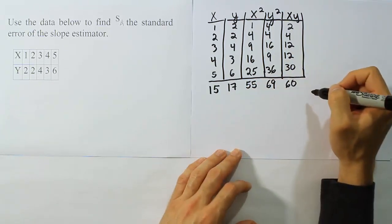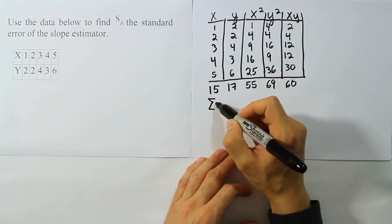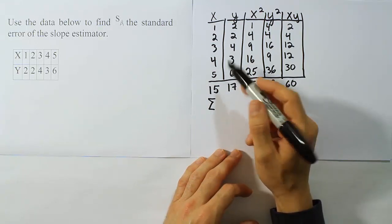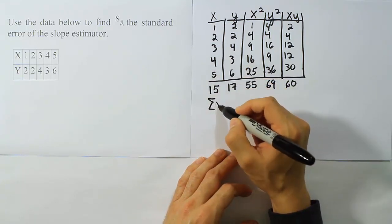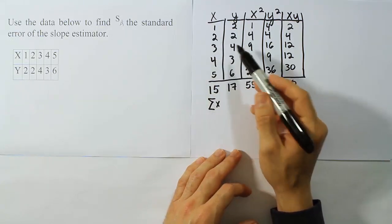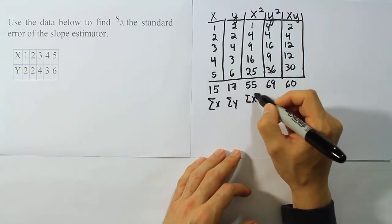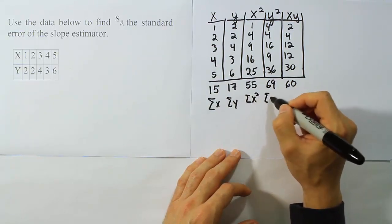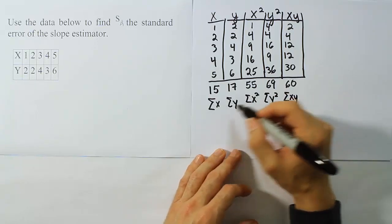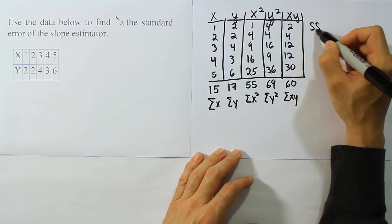So you'll want to double check that arithmetic, but I believe that's all correct. Then we have to come up with the sum of squares values. So in order to do that we're going to need to name these so we can use them in the formulas for our sum of squares. So we're going to call this the sum of the x column. This is the sum of the y column. This is the sum of x squared, and this is the sum of y squared, and this of course is the sum of x times y.